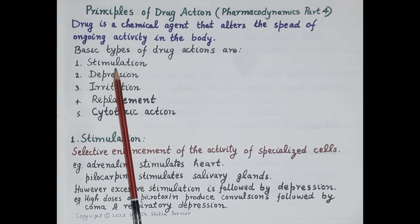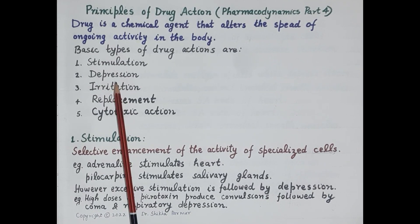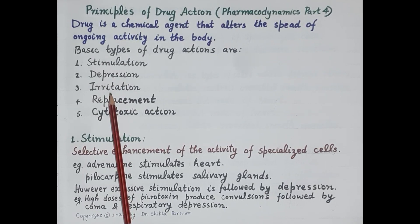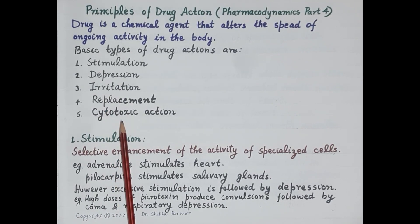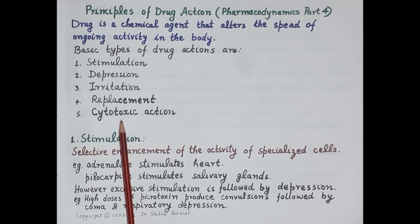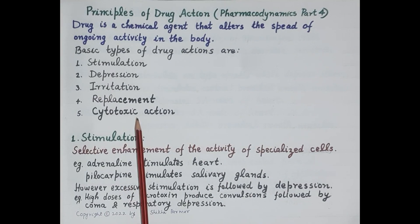The basic types of drug actions are: first, stimulation — increase in the activity of a cell, organ, or system; second, depression — reduced activity; third, irritation — producing an irritative effect; fourth, replacement — used as replacement therapy when there is deficiency of any vitamin, mineral, hormone, or neurotransmitter. Apart from this, a drug can also produce cytotoxic action, damaging cancerous cells or killing invading parasites in the body.